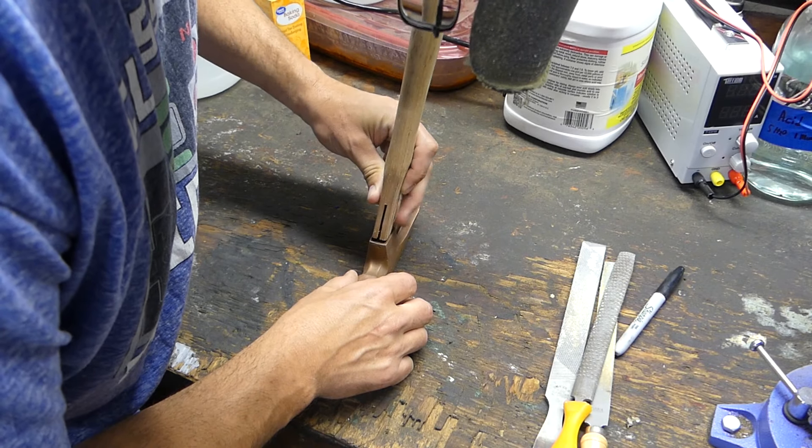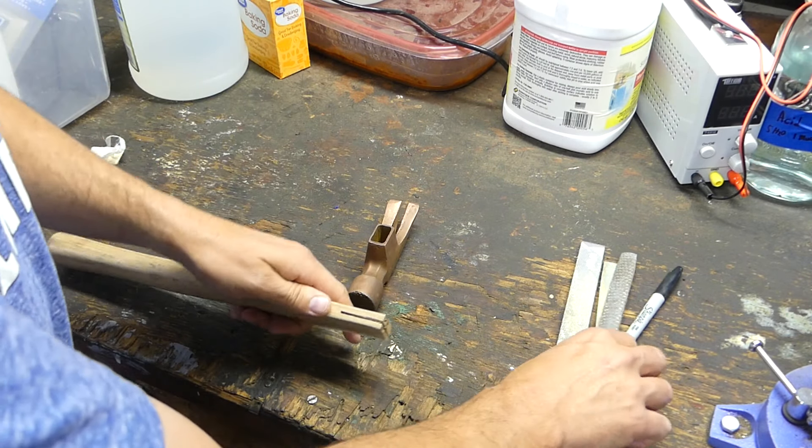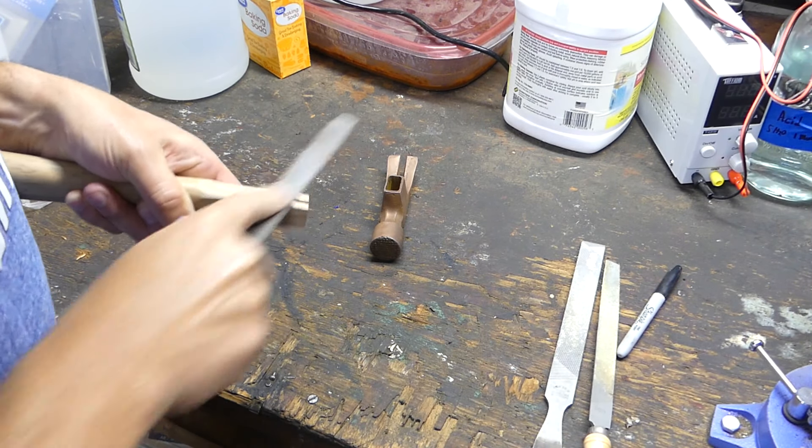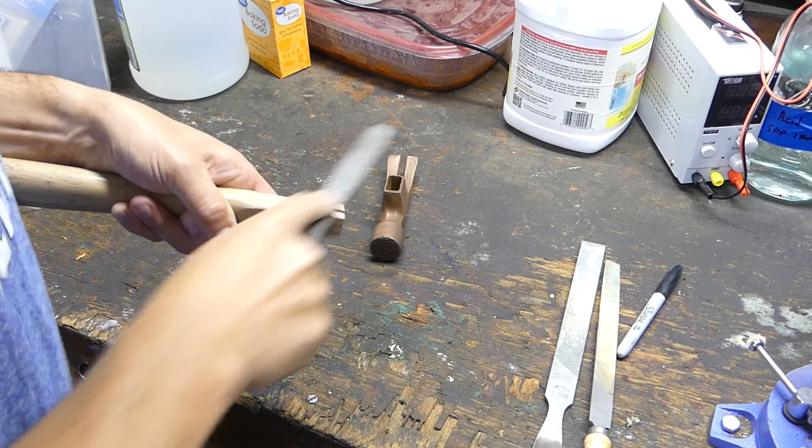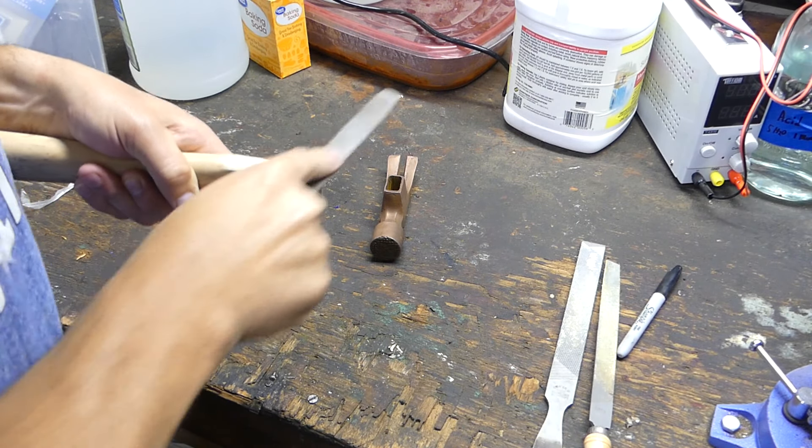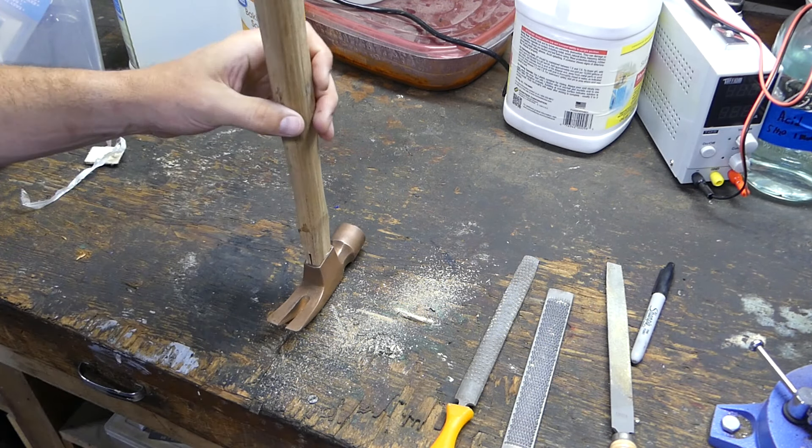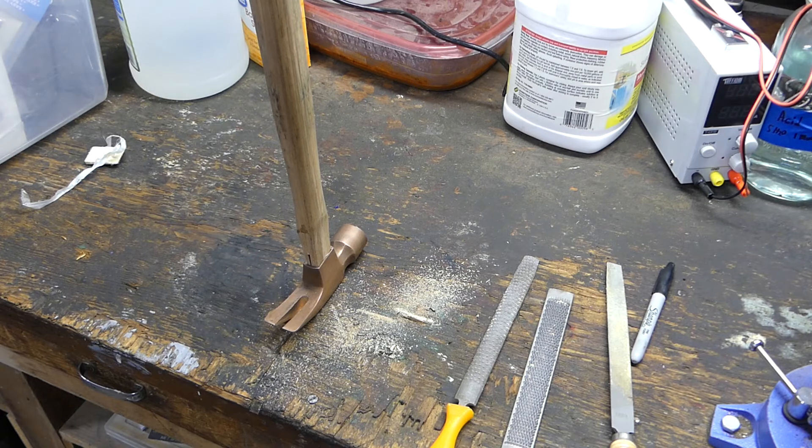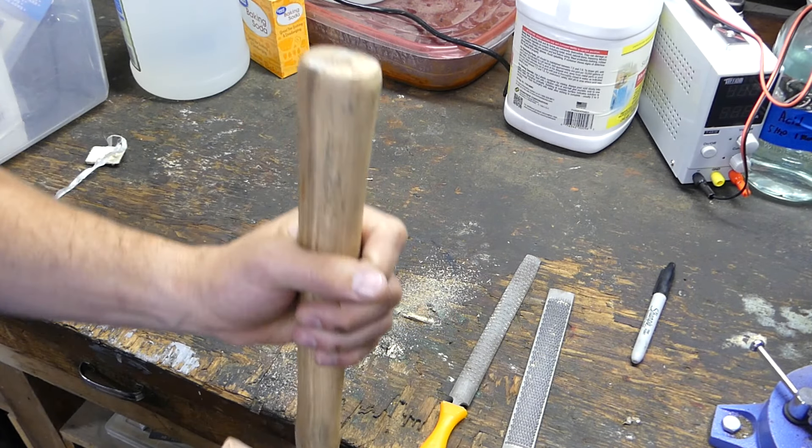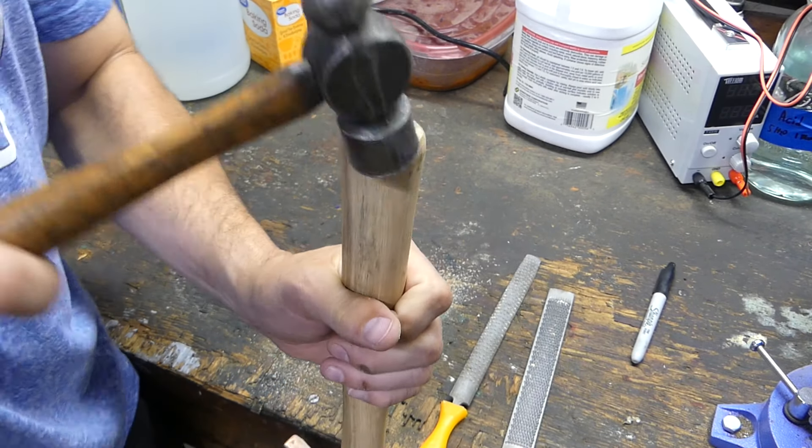The handle was a little bit bigger, so I used the rasp and file to get it down to size. It didn't take much at all though. It went really quick. Once I got it to fit, I did the Defying Gravity move where you hold it up and hit the handle and instead of the head coming off, it moves its way up.